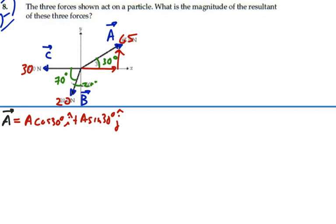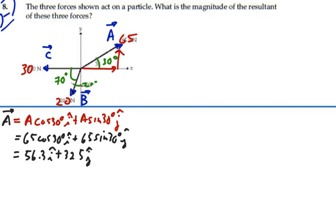Well, the magnitude of A is 65, so this is going to be 65 cosine 30 I plus 65 sine 30 J. And that is equal to 56.3 I plus 32.5 J. So that is our vector A.